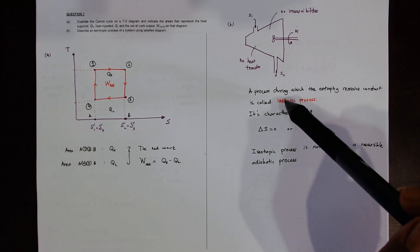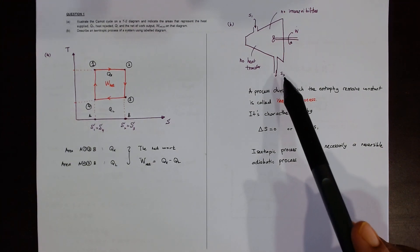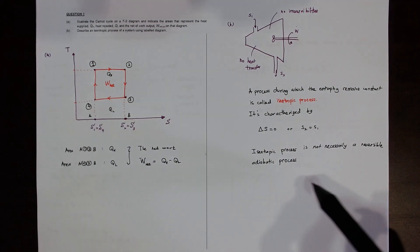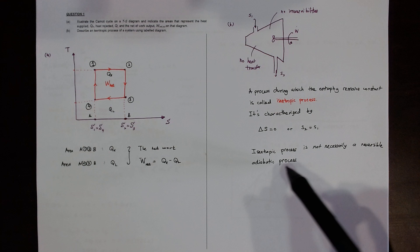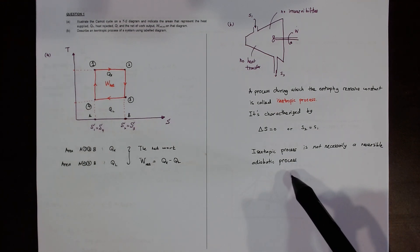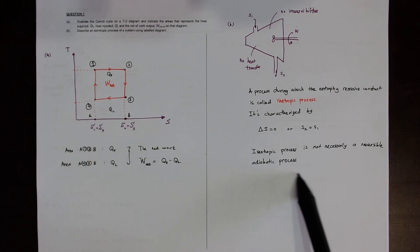So when in the later on in the exam they say about isentropic process, that means S2 minus S1, the amount in equals to the amount out, or characterized by this entropy remain constant. It's very simple explanation of the entropy. So the isentropic process is not necessarily irreversible adiabatic process. That is the explanation for tutorial 1, question 1.